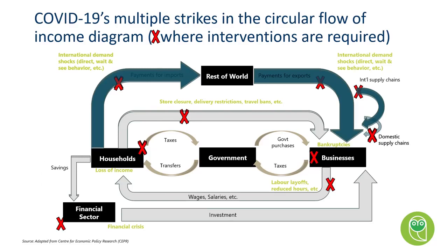Using the circular flow diagram from economics, we thought about the different places in which the economy has been broken after COVID-19: households being unable to pay taxes, disruptions to imports and exports, international and domestic supply chains, businesses becoming bankrupt, labour layoffs and reduced hours, and the impact on the financial sector through banks if businesses and households can't continue repaying their debts.